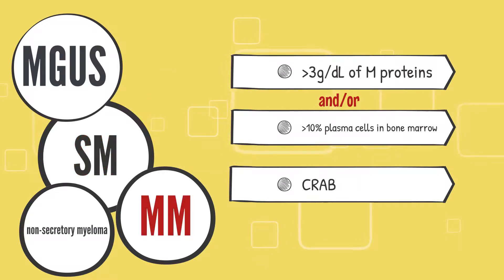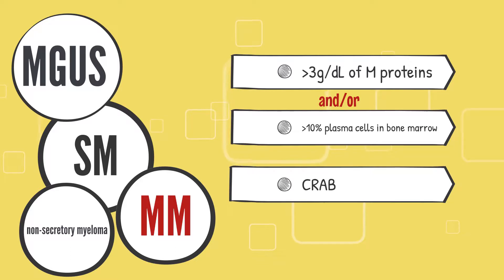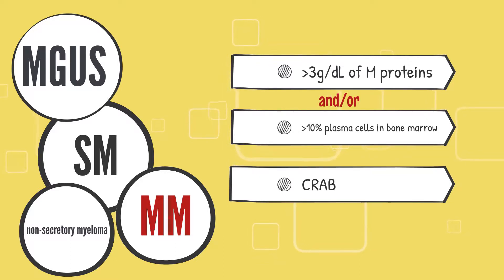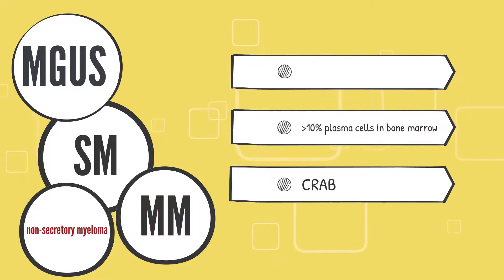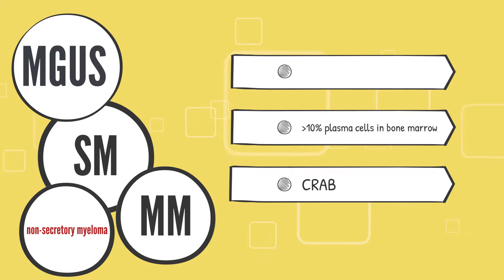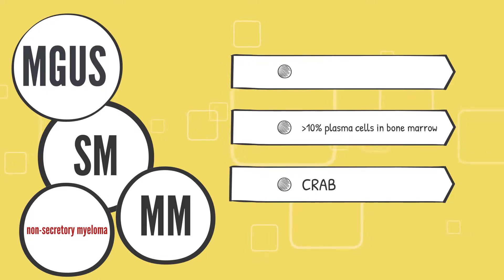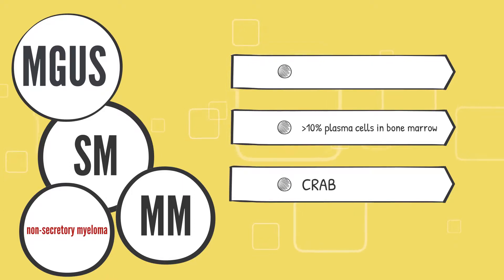Multiple myeloma is characterized by the production of more than 3 grams per deciliter of M-proteins, more than 10% of plasma cells in the bone marrow, and evidence of end-organ damage. In non-secretory myeloma, as the name suggests, M-proteins are not produced, but there is more than 10% plasma cell infiltration in the bone marrow and features of end-organ damage.